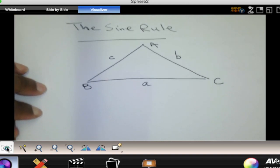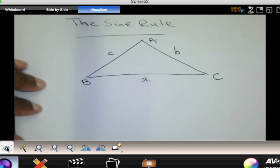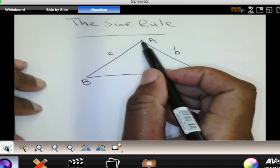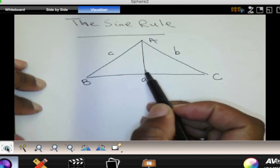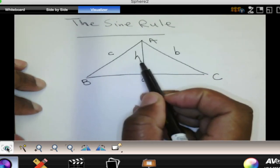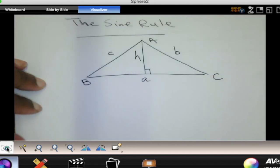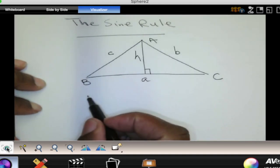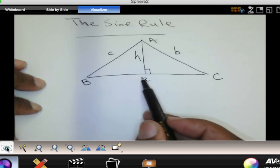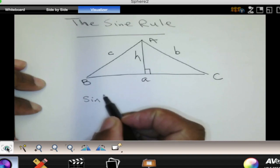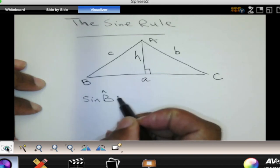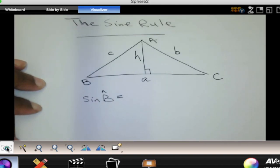I want us to construct a perpendicular height, say from point A for now, and let's call that one h. And so we now have two right angle triangles there and we can work out the sine of B. Please, from that diagram, tell me what sine of B is equal to.